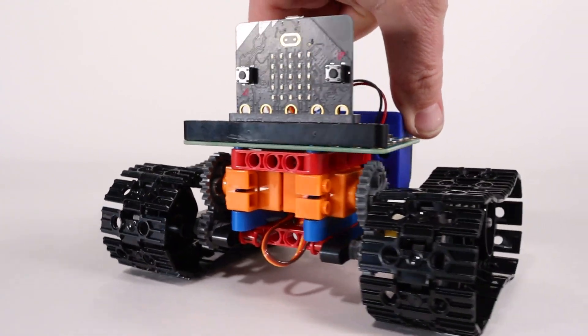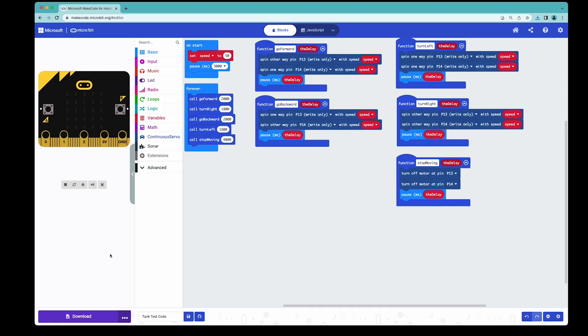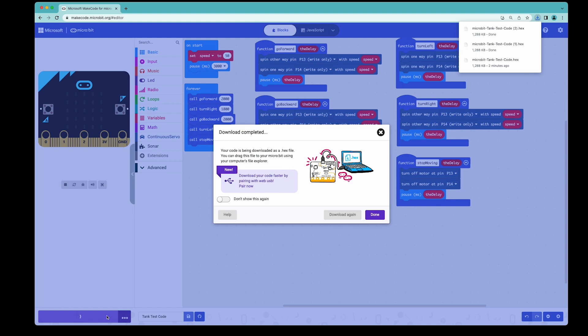Not until we add some code and connect up the battery power. Follow the link in the step-by-step tutorial, download the code, and copy it to the micro bit.